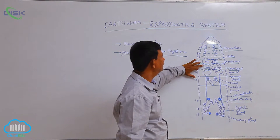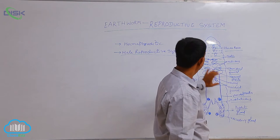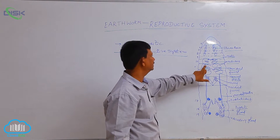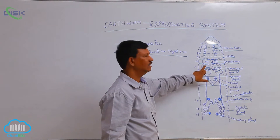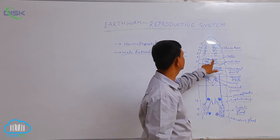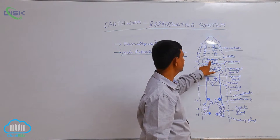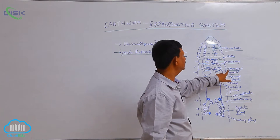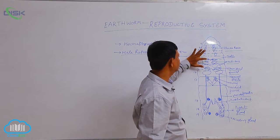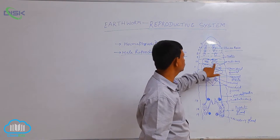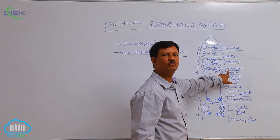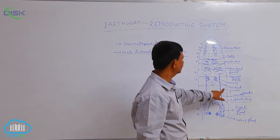There are two pairs of seminal vesicles. The first pair is situated in the 11th segment and the second pair is found in the 12th segment. After production of male gametes, testes liberate them into the segment. In the 11th segment, spermiducal funnels are present. These cup-like structures, also two pairs, receive the male gametes from the surrounding and possess cilia.